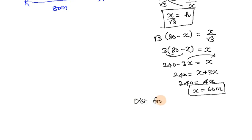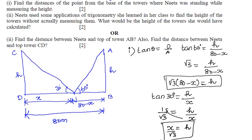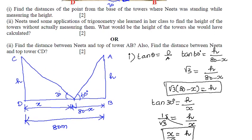Distance from CD: x is 60 meters. Distance from AB equals 80 - x, which is 80 - 60 = 20 meters. So this is the first subdivision answer.